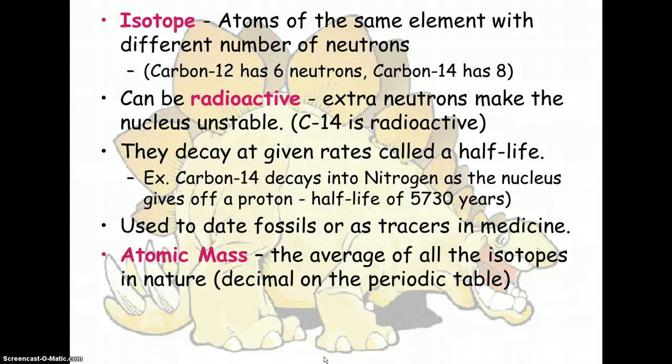The atomic mass is what they call the average of all of the isotopes of a particular element in nature. This is just a decimal that's found on the periodic table. We actually won't be talking about it much in class, but for example, carbon is 12.011. It's the average of all of the carbon 12 and carbon 13 and carbon 14 based on how common they are in nature. So that's why they're decimals.